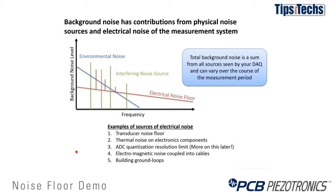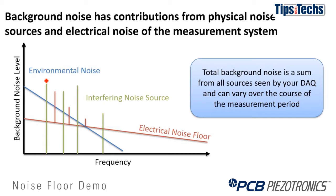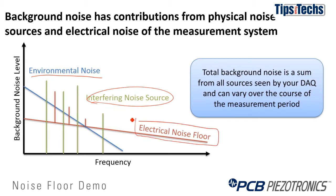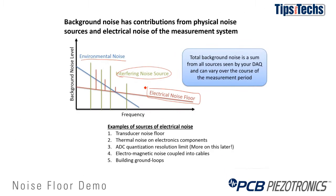There are several types of background noises we need to worry about: environmental acoustic noise, interfering noise sources of other mechanical systems in the room, and the electrical noise floor of your transducers and your data acquisition system. Usually the environmental noise and the interfering noise sources are dominant at low frequencies. At higher frequencies, the electrical noise floor of the transducers and the data acquisition system dictate the overall noise floor of your measurement.